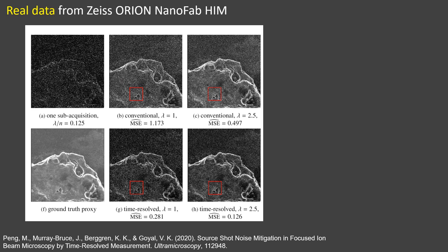Our methods are validated with real experimental data as well. Reconstructions by the conventional method are shown in the top row of columns two and three. The time-resolved reconstructions for the corresponding doses are displayed in the bottom row. With increasing ion dose, the image quality improves as expected and our method achieves lower mean square error compared with the conventional method.